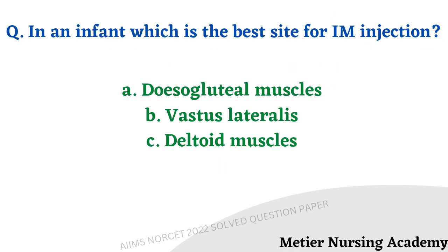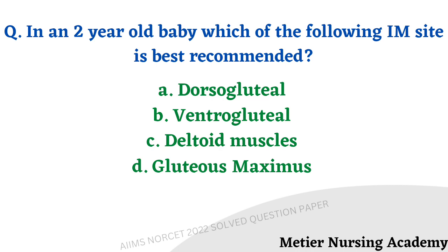In an infant, which is the best site for IM injection? Options: dorsogluteal, vastus lateralis muscle, deltoid muscle. The right answer is option B — for infants, vastus lateralis muscle is the preferable site. In a two-year-old baby, which IM site is best recommended? Options: dorsogluteal muscle, ventrogluteal muscle, deltoid muscle, gluteus maximus. Since vastus lateralis is not among the options for the two-year-old, the right answer is option B, ventrogluteal muscle.